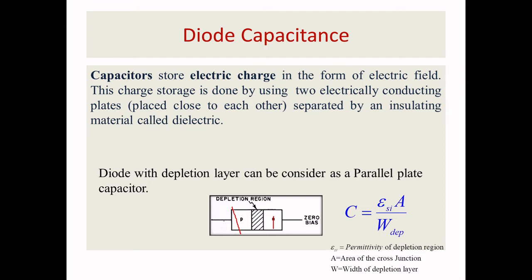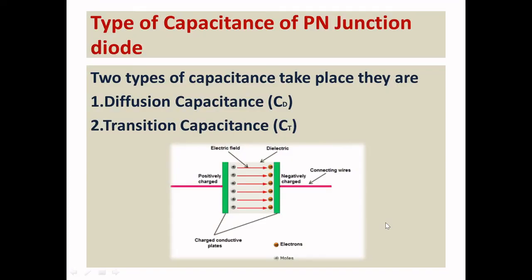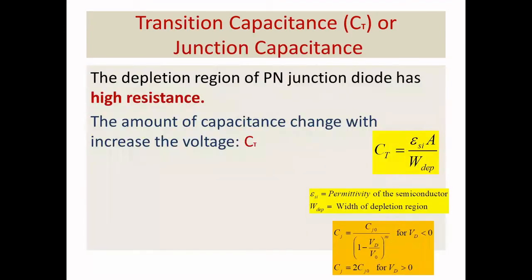The same scenario applies in our p-n diode. When you apply charge, the depletion layer is acting as the dielectric part. So the equation is: capacitance C = epsilon_silicon × A divided by W, where A is the cross-sectional area and W is the width of the depletion region. Diode capacitance is classified into two types: diffusion capacitance C_D and transition capacitance C_T. The other name for transition capacitance is junction capacitance C_J.